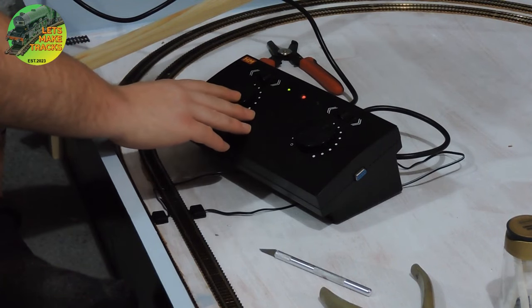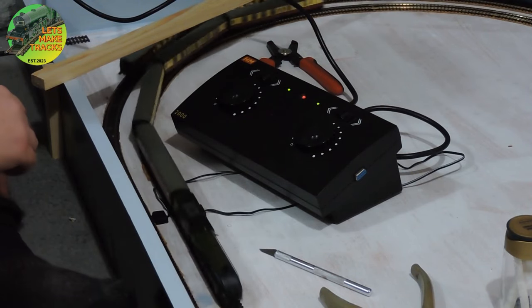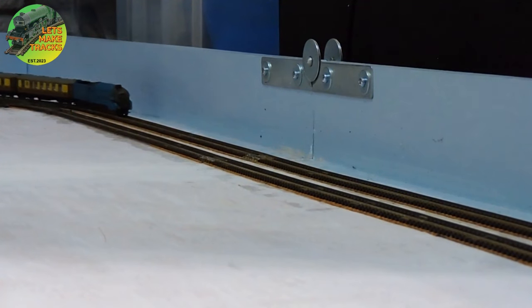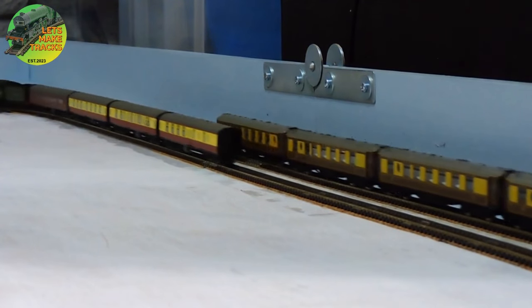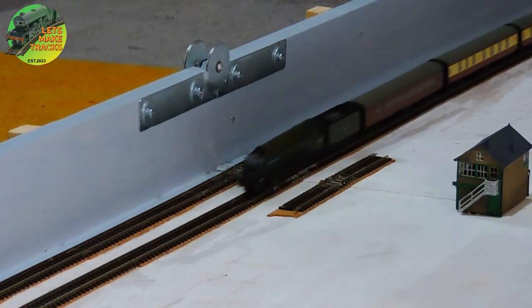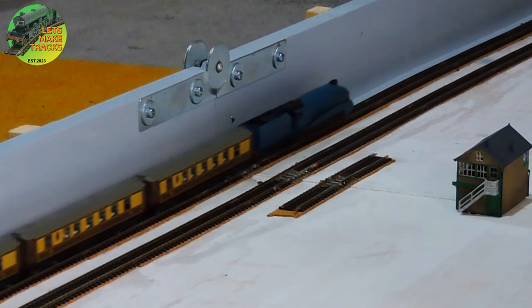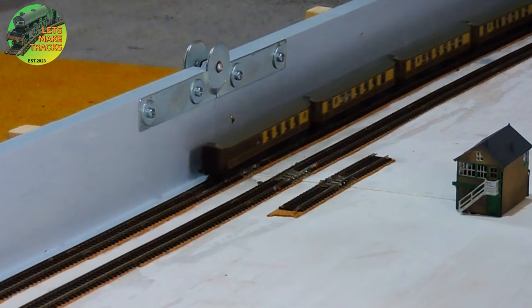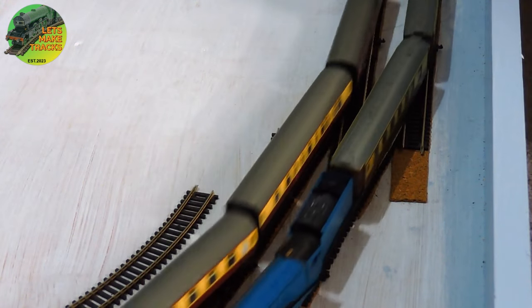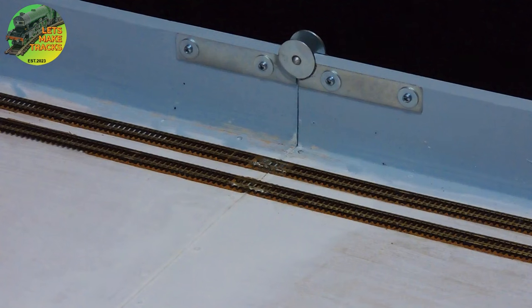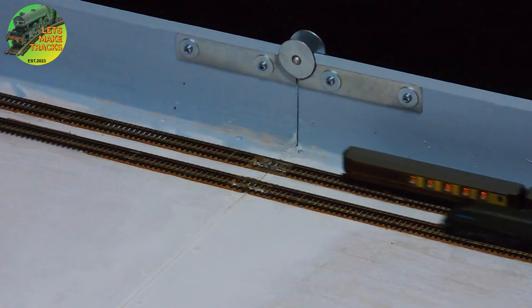Time to see if all my efforts have been worth it or in vain. Will they make the gap? Will they get all the way around the board? So many questions. So I'm going to call that a success. So there's two running lines I have at the moment, the up and the down. Obviously I'm going to have to complete the third loop when I'm able to get some more track from Hornby. But yeah, the system works. They're running very well. I'm quite happy.